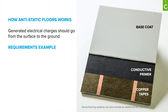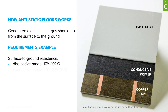Here on the slide you can see the example according to ASTM F-150: surface-to-ground resistance for dissipative and conductive ranges. To meet such strict requirements, the compound of the base coat should be conductive, and the use of an antistatic or conductive agent directly in the base coat formulation is the most common solution right now in the industry.